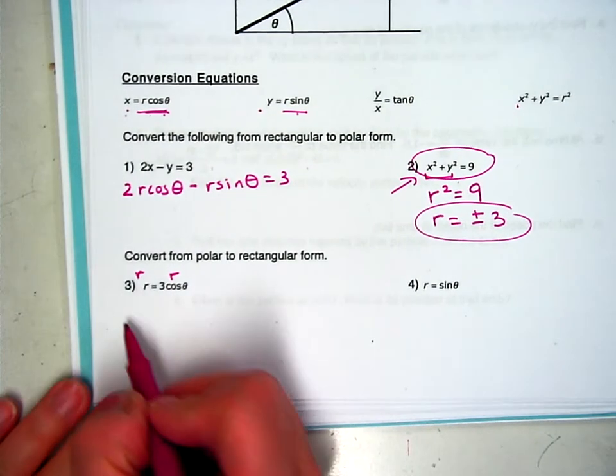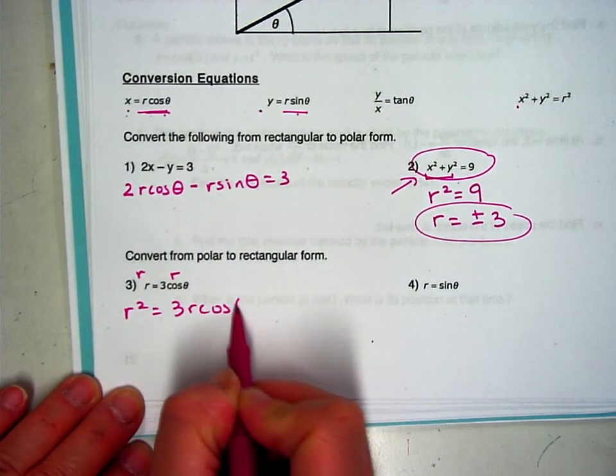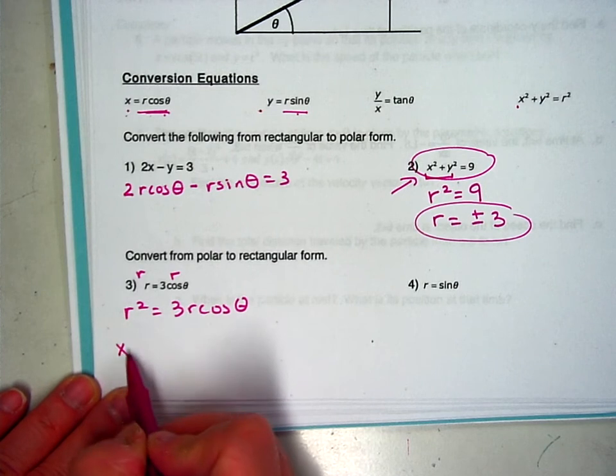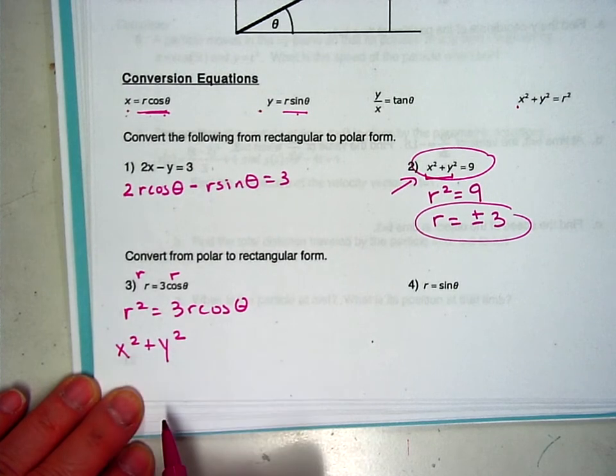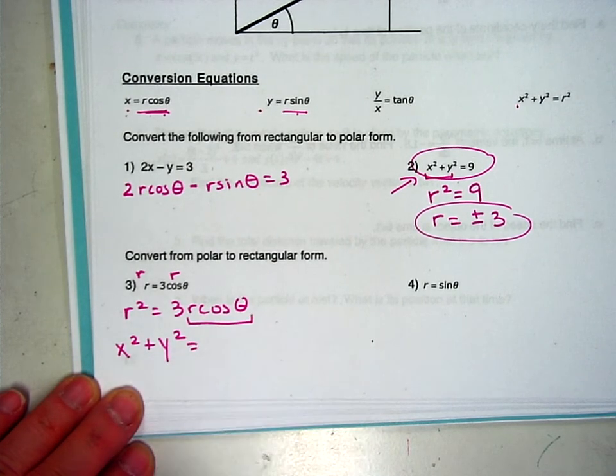So if I do that, you get r squared equals 3 r cosine theta. So the r squared can be replaced with x squared plus y squared. This will all become x, so there's my rectangular form.